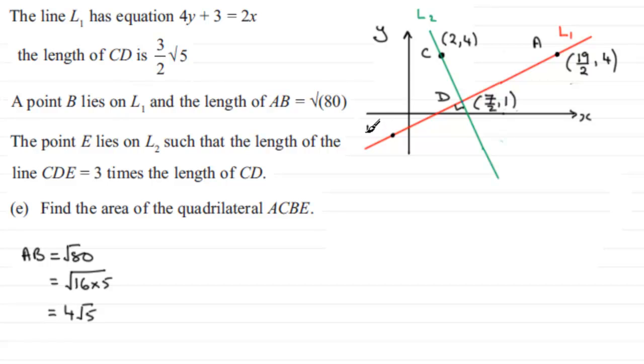So that's where B is on L₁, and we know that this distance is root 80, but when it comes to doing some calculations I'm going to use 4 root 5 instead. Now we're told that the point E lies on L₂ such that the length of the line CDE is three times the length of CD.